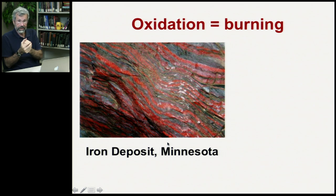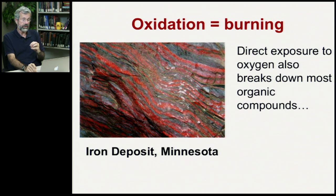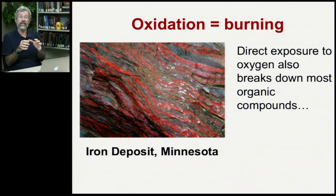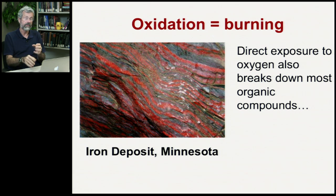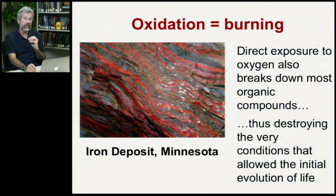Oxygen had this characteristic of binding with iron to cause rust — that's the same as burning if you have organic molecules suddenly exposed to a lot of oxygen. Direct exposure to oxygen breaks down most organic compounds. Our primordial soup, manufactured by a planetary Miller apparatus for hundreds of millions of years, didn't have to deal with oxygen, so all those compounds could be in the open atmosphere with no real problem. But once oxygen became common, they started to deteriorate — they went stale, they didn't work anymore. And so that destroyed the very conditions that allowed life to evolve in the first place.